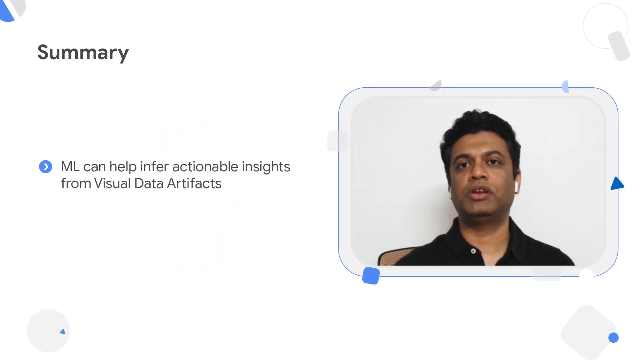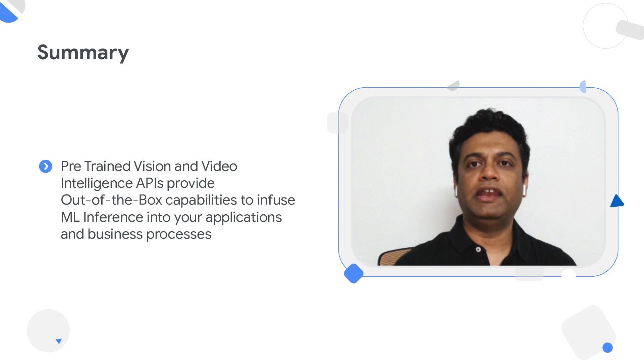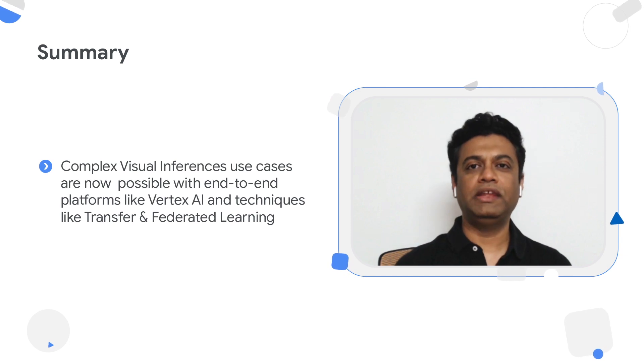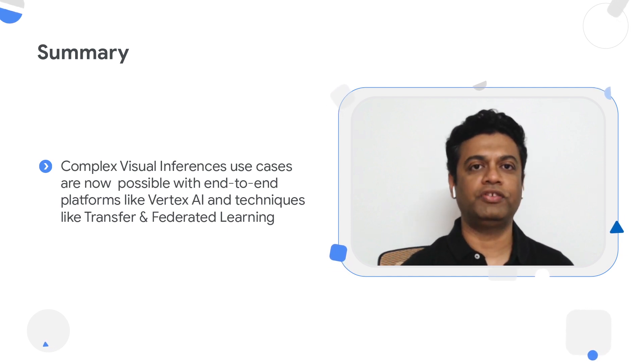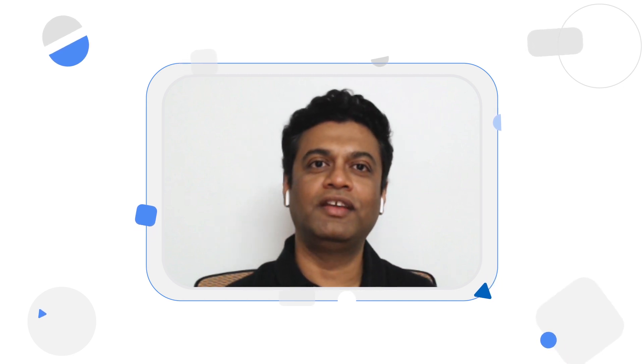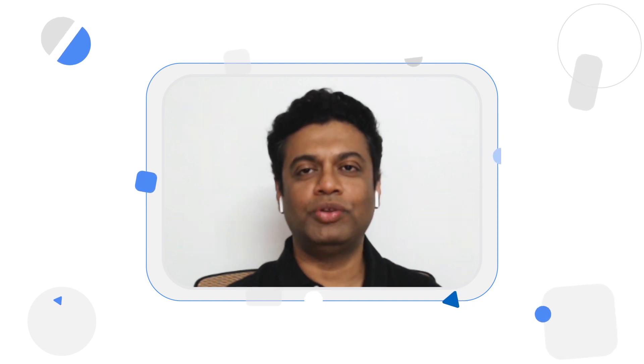To summarize, advances in machine learning on visual content help you detect and understand content with very high accuracy, automate expensive workflows, and ensure better quality, faster decision making, and higher operational efficiency. Google has the right set of tools and expertise in its ML portfolio to help you on your Visual Insights journey. Please reach out to discuss your specific needs — we'd be happy to help you solve your business challenges. Thank you for watching and we look forward to hearing from you.